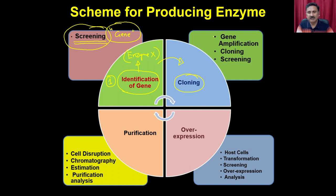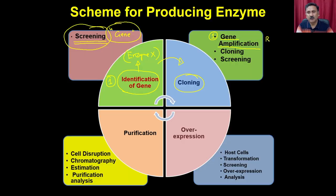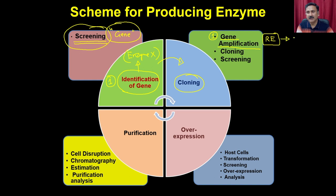Cloning involves multiple steps. In step 1, you amplify the gene with site-specific primers that contain restriction enzyme recognition sequences. Once you digest the amplified gene with the restriction enzyme, it produces sticky ends. These sticky ends facilitate the entry of the gene into a suitable vector, producing the clone. In step 2, restriction digestion generates the sticky ends used for cloning into the suitable vector.